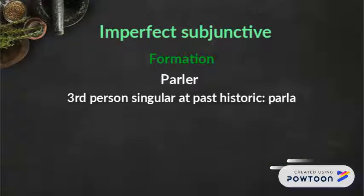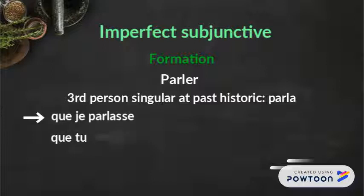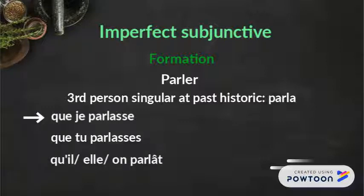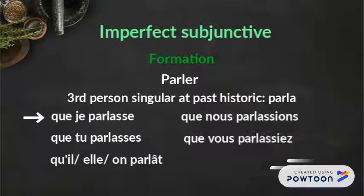The third person singular at the past historic is PARLA. Therefore, the imperfect subjunctive of PARLER will be: que je parlasse, que tu parlasses, qu'il/elle parlât, qu'ils/elles parlassent.